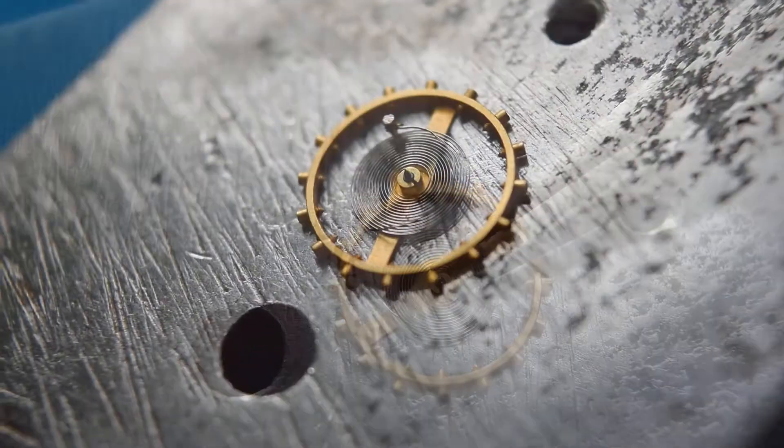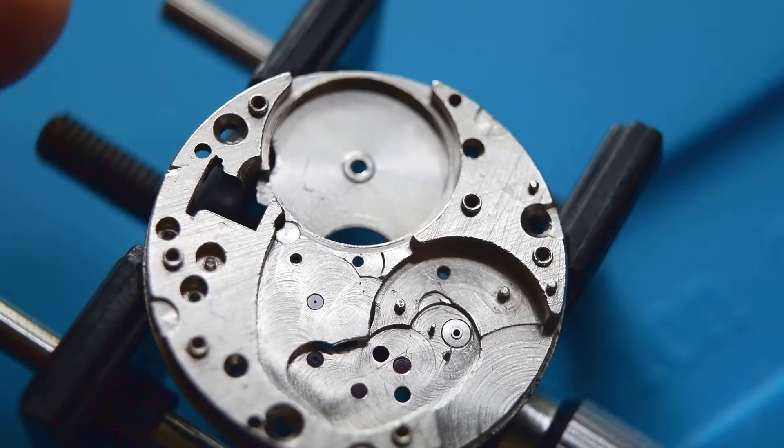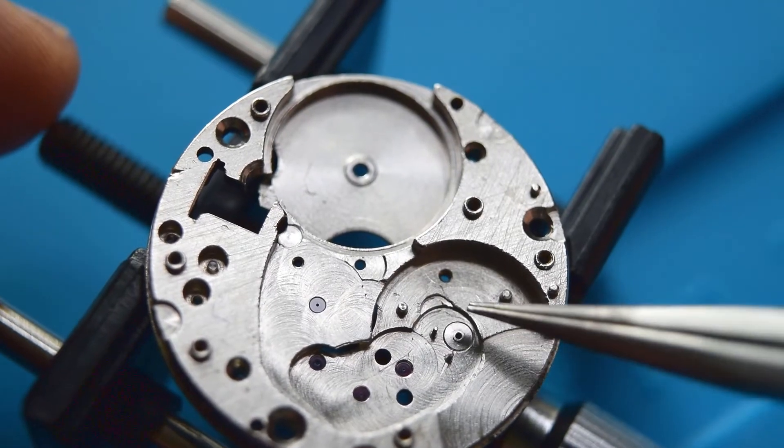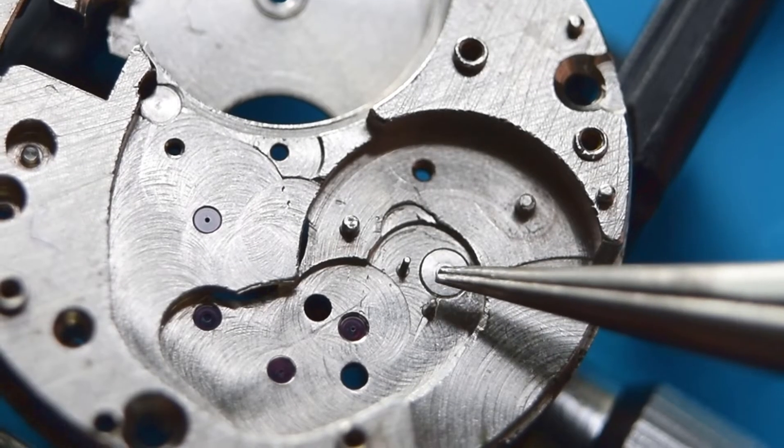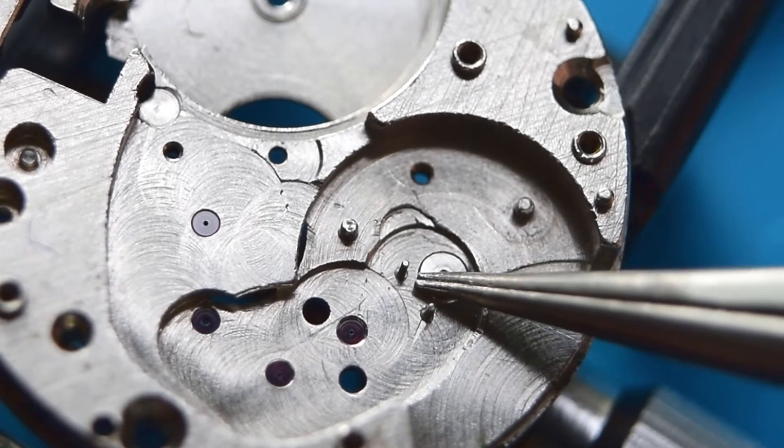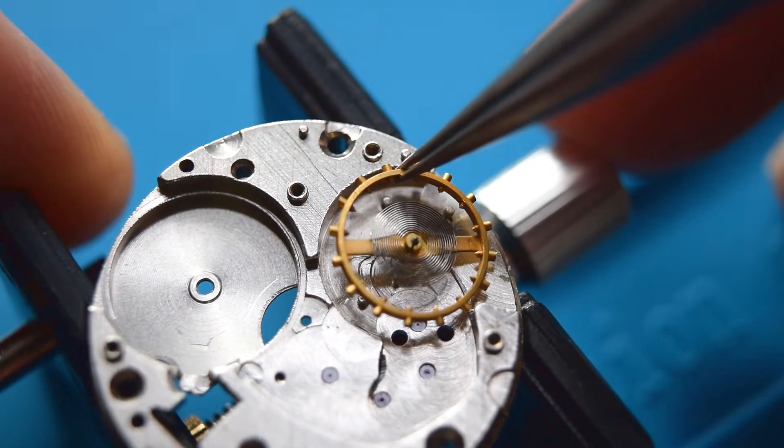Anyway, you have to be very careful and now I have to install the balance wheel on this main plate and the roller jewel should be exactly between these two pins.